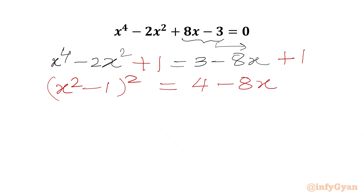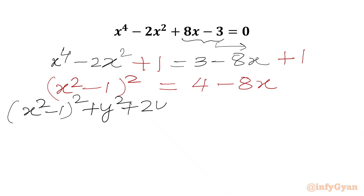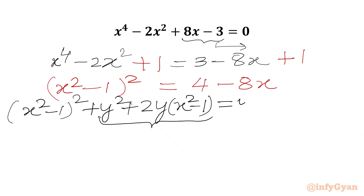Now we will write our LHS as (x² - 1)². We will be adding a² + b² + 2ab form, so we will write 2y(x² - 1). So we have added y² + 2y(x² - 1) to the left hand side.